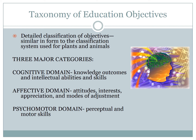A second category is the affective domain — spelled with an A, not an E. Affective has to do with your feelings, your attitudes, your interests. For example, if you are trying to promote engagement in math and you want students to be interested in math, that might be an affective objective. A psychomotor domain might have to do with perceptual and motor skills. For example, if you're a physical education teacher and you want students to be able to kick a ball, that might be part of the psychomotor domain. So three classifications make up the taxonomy of educational objectives.